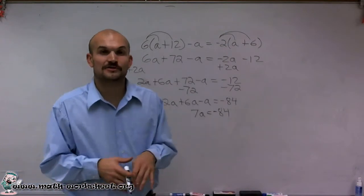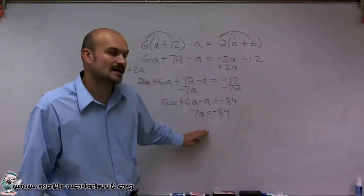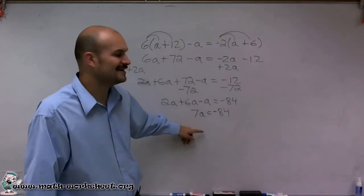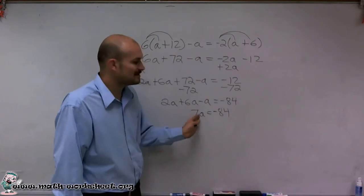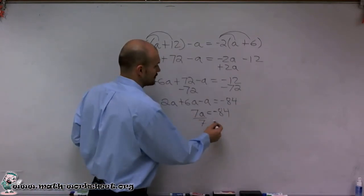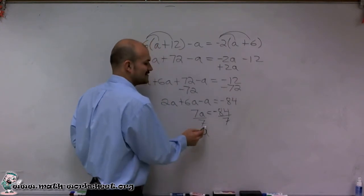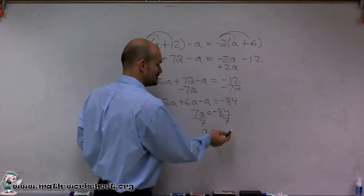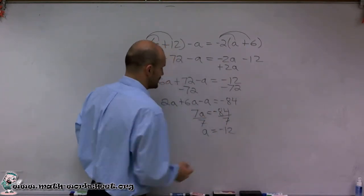So now the last thing I need to do is use my inverse operation one more time to get my a by itself. So you can see from here all the way down to here, I've finally got it down to 1a. Now I notice my a is being multiplied by 7, so to undo multiplication, I'm going to divide by 7 on both sides. And therefore, 7 divided by 7 is 1, 1 times a is a. So a is going to equal 7 goes into negative 84, a negative 12 times.